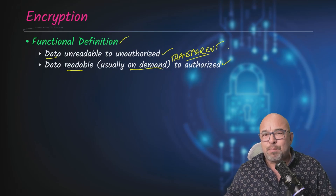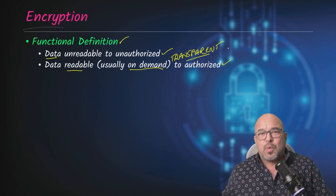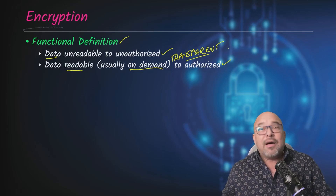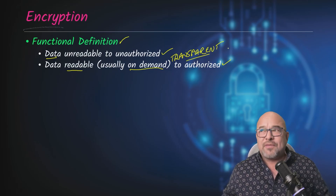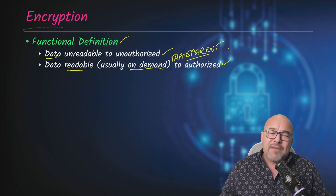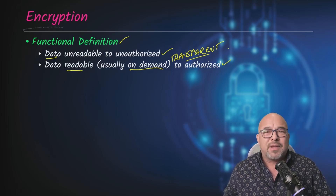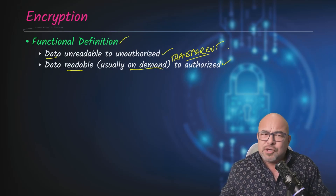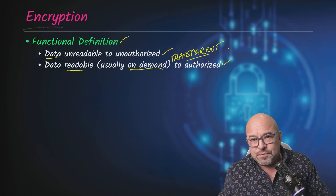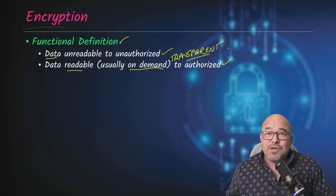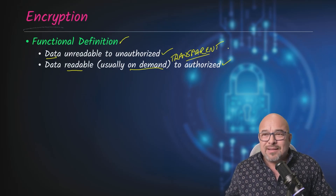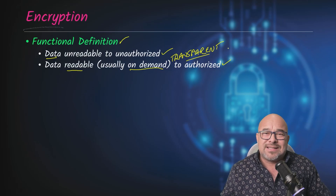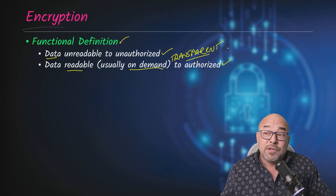This is also known as transparent — it should be a transparent process, the easiest way to do it. There are methods where you do have to enter a password, a special key, or some kind of two-factor authentication. But a lot of times it's either transparent or fairly easy to do, and yet the encryption should be pretty tight, meaning it's virtually impossible for someone who's not authorized to access that data to actually do so.